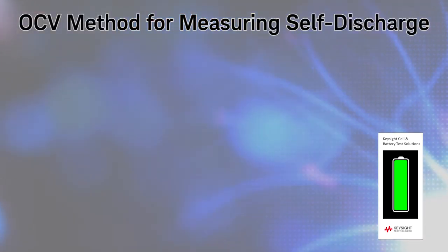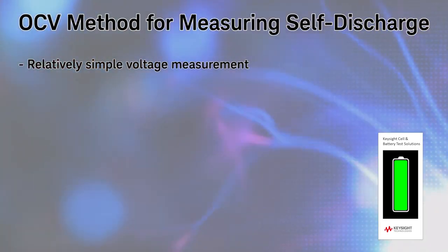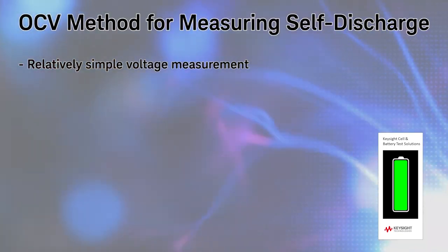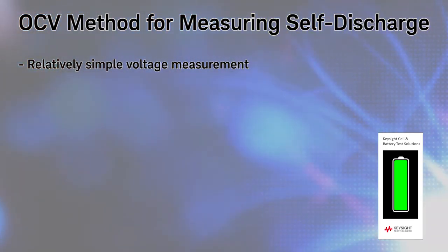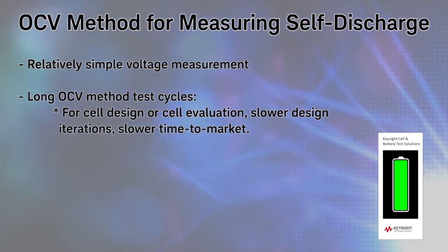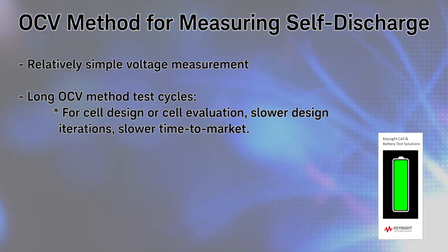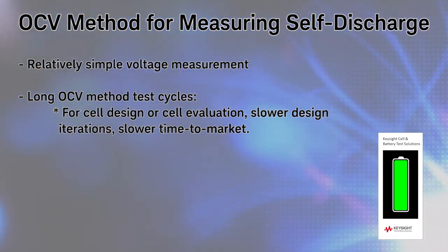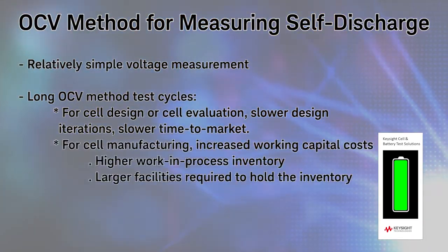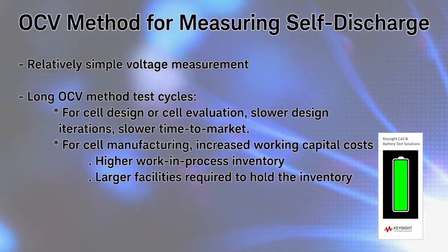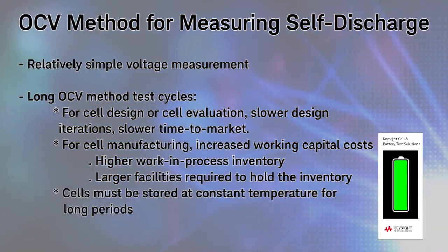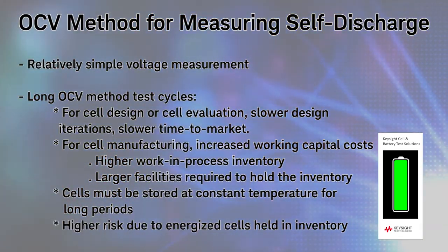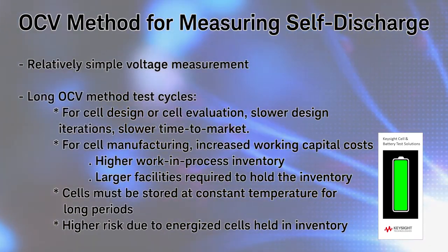To summarize the OCV method: it is a relatively simple voltage measurement requiring a precision voltmeter, but there are issues to be aware of. The OCV method commonly takes weeks or even months, and these long test cycles create the following issues: slower design iterations, slower time to market, higher inventory and facilities costs, cells must be stored at constant temperature for longer periods, and higher risk due to energized cells being held in inventory.